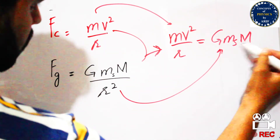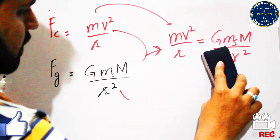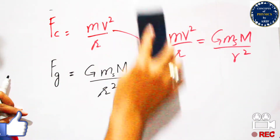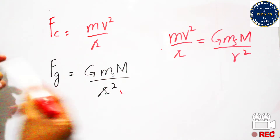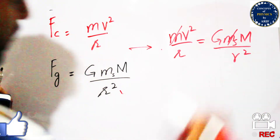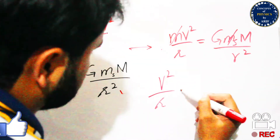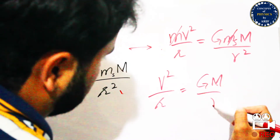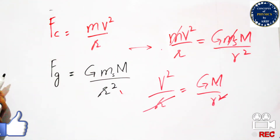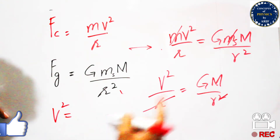We simplify these terms to calculate the orbital velocity. Cancelling small m from both sides gives v²/r = G·M / r². Then cancelling one r, we get v² = G·M / r.